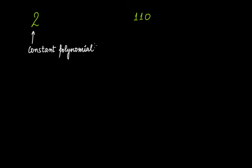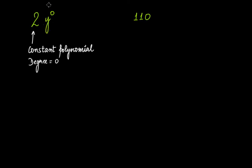Why constant? Because it's just a number 2 — it's just a number. That's why it's a constant polynomial whose degree is zero. Because I can write this 2 as 2 multiplied by x raised to the power of zero. Or I can write it as 2 multiplied by y raised to the power of zero, or as 2 multiplied by t raised to the power of zero. You can take any variable — this number stays the same.